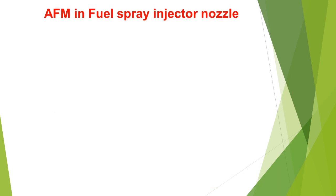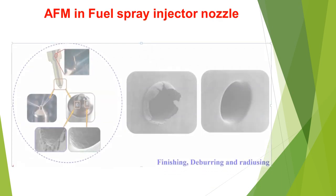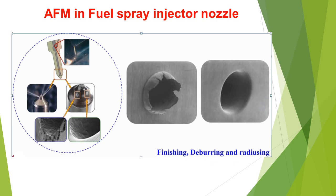AFM in the fuel spray injector nozzle. As seen in this diagram, the fuel injector is used to spray diesel inside the combustion chamber. We have minute holes, and we want to perform finishing, deburring, and radiusing of the holes using this AFM process.